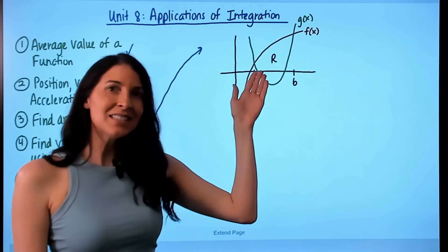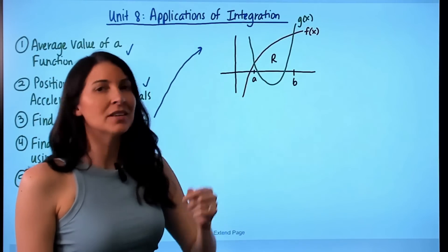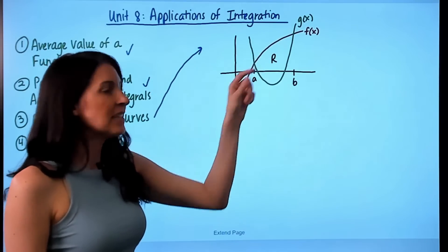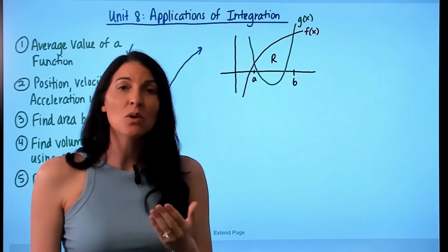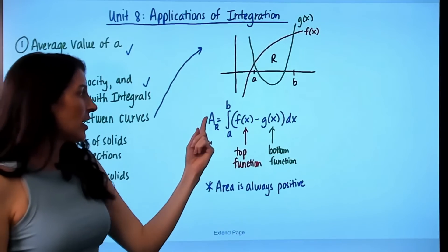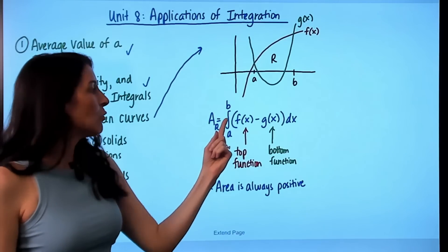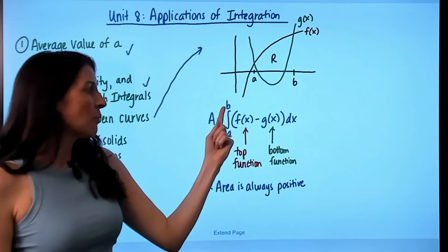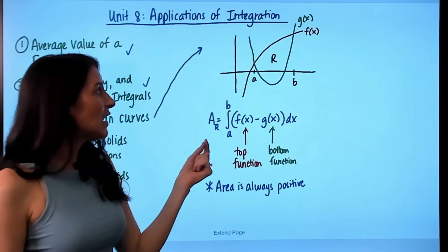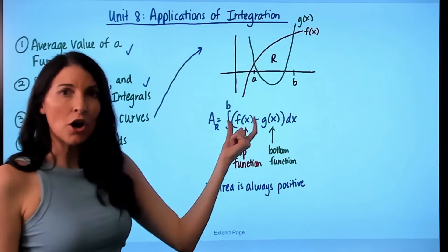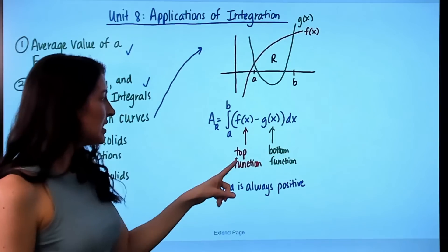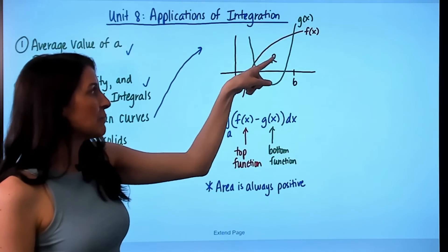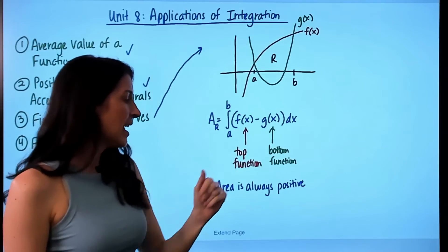Next up is finding the area between curves. If you're asked to find the area of a region R enclosed between curves f(x) and g(x), you set up an integral from the intersection point at a to the intersection point at b. If your functions are written in terms of x, you take the top function minus the bottom function — f(x) minus g(x) dx.